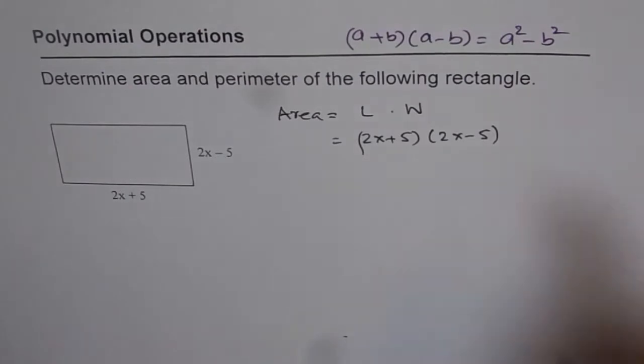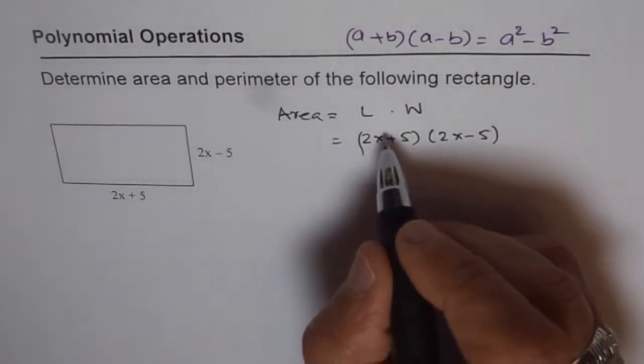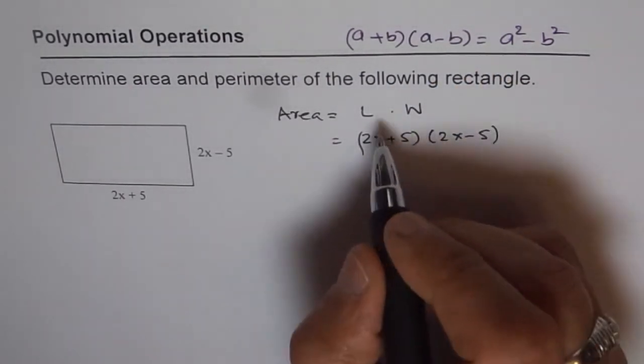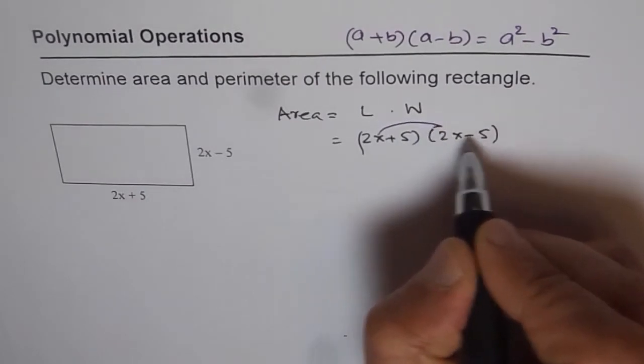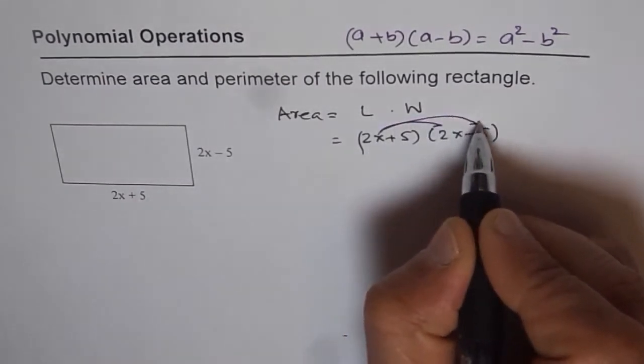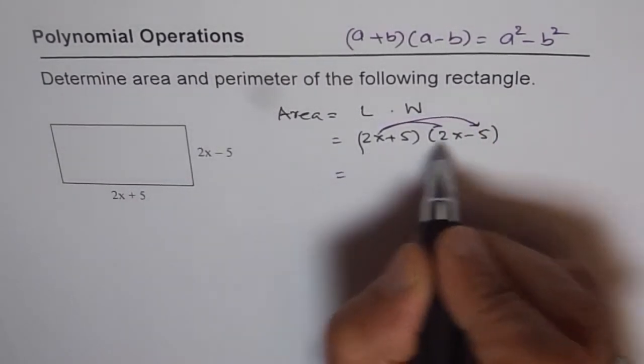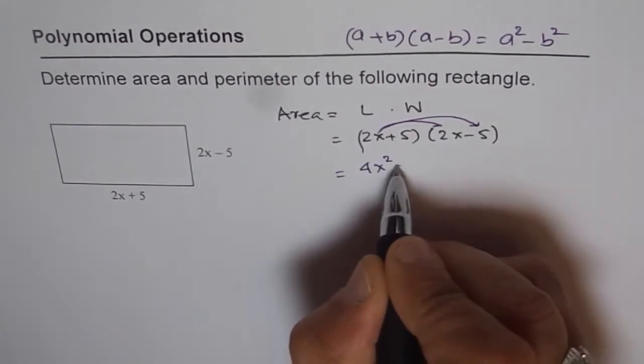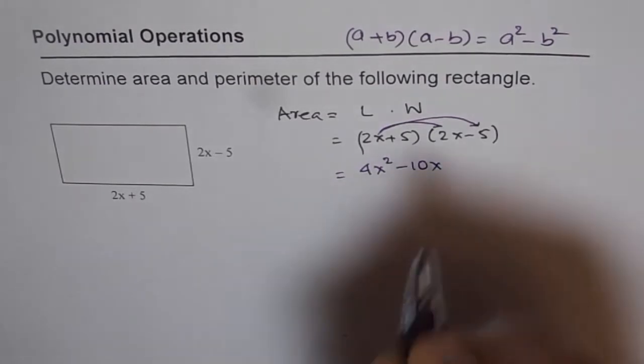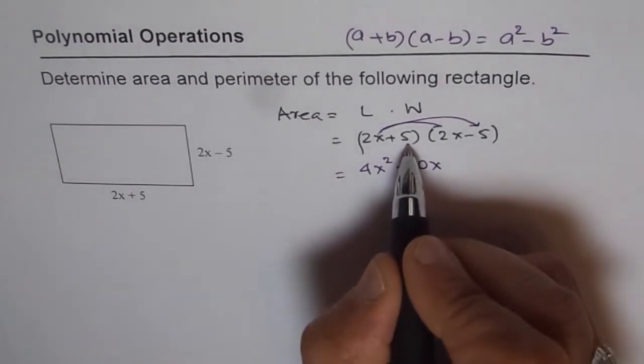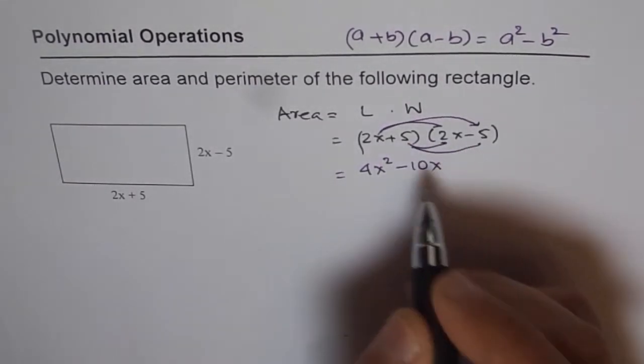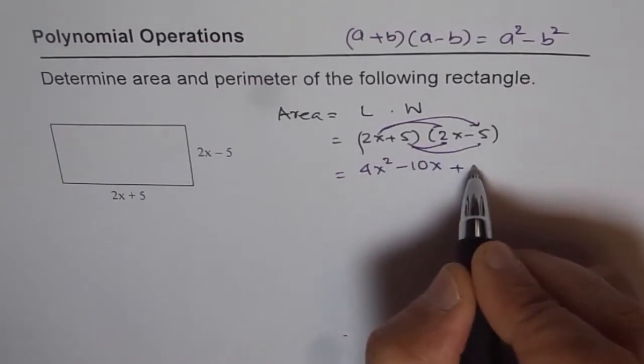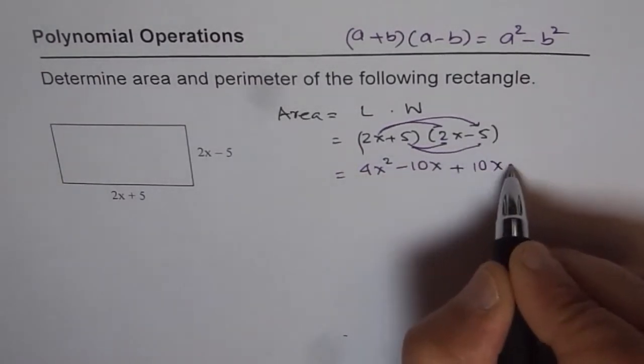Well, in any case, if you don't remember, what we will do is we'll just expand and see. So we'll multiply 2x with both the terms. So we get 2x times 2x is 4x squared and 2x times minus 5 is minus 10x. Now we'll do the same with 5, right? So we get plus 10x minus 25.